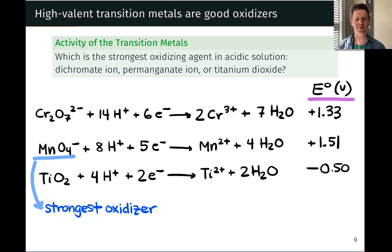If you look at the reduction potentials for each of these species, you can see that both dichromate and permanganate are pretty good oxidizers with a positive reduction potential indicating that they're readily reduced. They will readily pull electrons from a reducing agent and become reduced themselves, acting as oxidizers in the process.